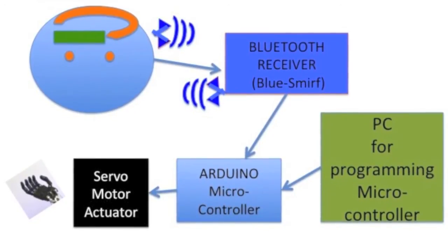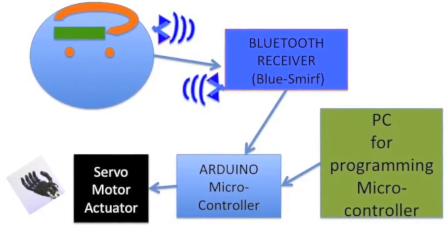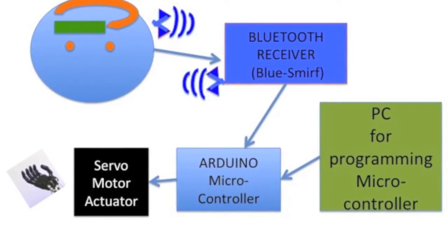That servo motor, when spun, will then spin some ropes that connect to the fingers. Thus, when the servo spins, the fingers will bend as well.